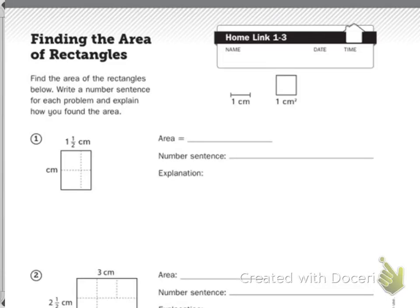Home link 1-3, finding the area of rectangles. The directions say find the area of the rectangles below. Write a number sentence for each problem and explain how you found the area.